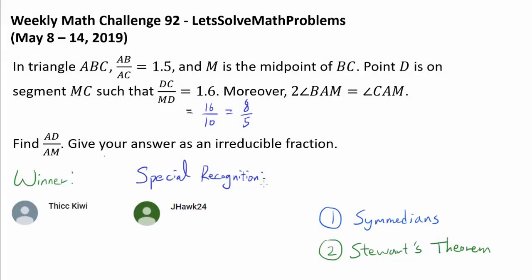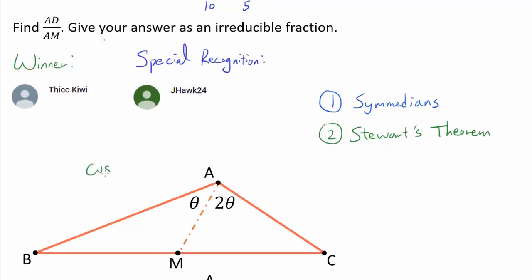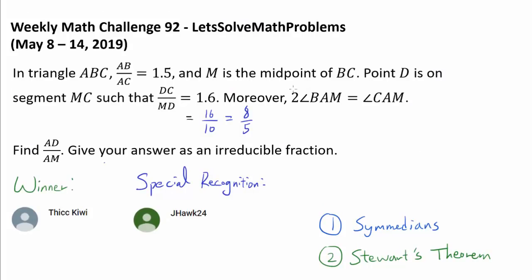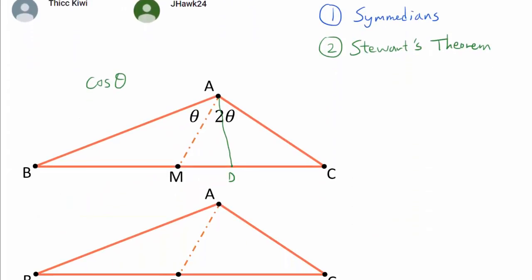Now, before we move on to the second solution, I want to take this time to recognize Thicc Kiwi and Jayhawk24. Thicc Kiwi for being the very first person to correctly answer this problem last week. And Thicc Kiwi actually found the cosine of theta first, and then used the law of cosines to deduce that AD is the angle bisector of triangle AMC, or that AD is the C-Median in this particular configuration. Now, Jayhawk24 deserves a special recognition for being the first person to realize, and I was not aware of this at all, that we don't need this condition on the angles that 2 times BAM is CAM. You can solve this problem without using angles at all.